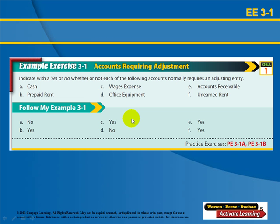Let's look at some examples of accounts that require adjusting. Cash does not require adjusting. Prepaid rent needs to be adjusted from month to month, especially if rent is paid a year or six months in advance. Instead of recording rent as an expense all in one month, we record it as a prepaid asset. Each month we convert the asset to an expense for that month's rent, so we show the expense in the period it actually belongs.